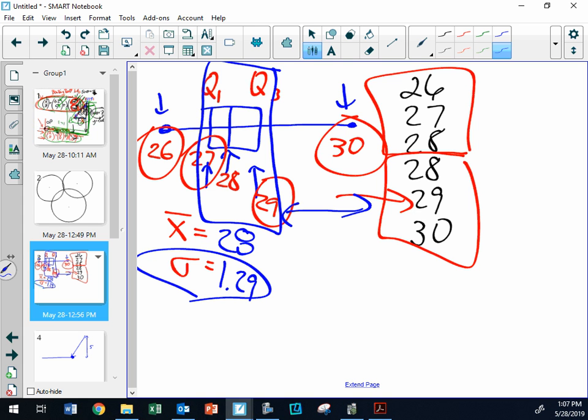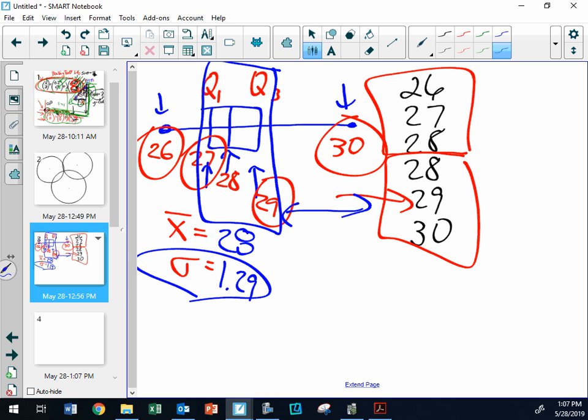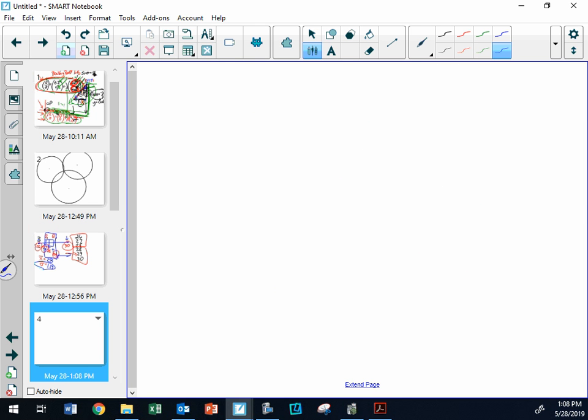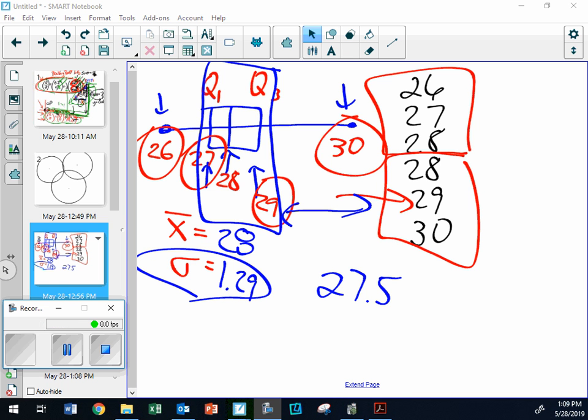Here is a problem where it's a Z score question. You are in this data, and you personally have a 27 and a half. We don't know what the data is, but you have a 27 and a half. What's your Z score? You know the average, you know the standard deviation. If you had a 27.5, figure out your Z score. I'm going to pause for a second while you try that one.